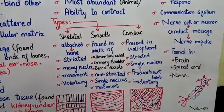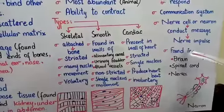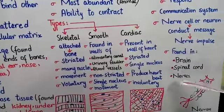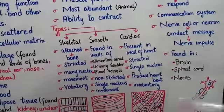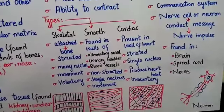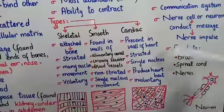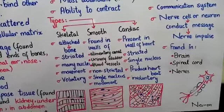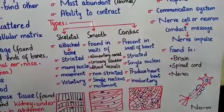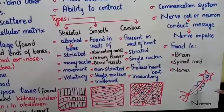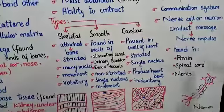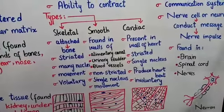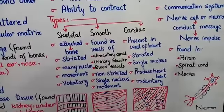Nervous tissue is found in the brain, in the spinal cord, and in the nerves spread throughout your body. A network of nerves is present throughout. The spinal cord and brain form our central nervous system, which controls your whole body activities. There are billions of neurons forming this communication system in your body.